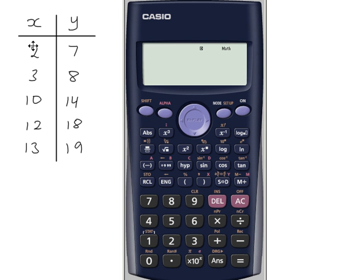To work out the product moment correlation coefficient for this data, reset the calculator first. And then we want mode, statistics, A plus BX, option two. Enter the X values, press equals after each value. Scroll down to go to the top of the table. Scroll across. Now enter the Y values. At this point, you should go through your data, check the X and Y data pairs, make sure they are correct.